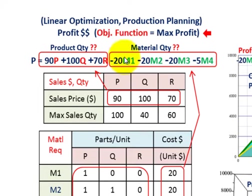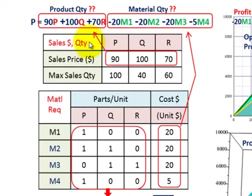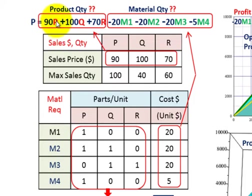We're going to start with our objective function and look at how we set up a linear optimization program for this profit maximization. We start with sales — we have a sales price and a maximum sales quantity for products P, Q, and R. The sales price is $90 for P, so that gives us 90 times P in our objective function, plus 100 times Q (sales price of $100), plus 70 times R (sales price of $70).